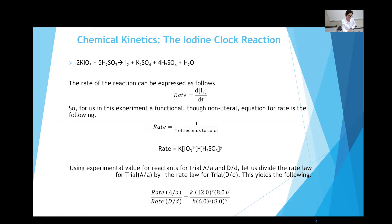When studying the rate of a reaction, we can track a reactant or product that is colored, or one that can react with another reagent to generate color. This tells us when the reaction has reached a certain point, and how long it took to get there — for example, how long it took for that color change to occur.